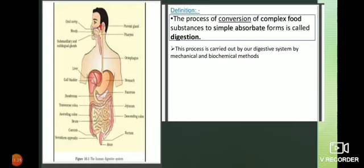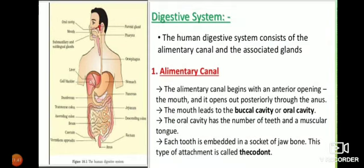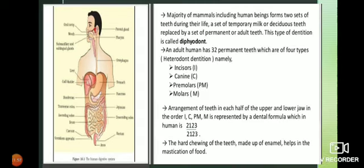Inside the mouth, you will find many teeth and a freely movable tongue. Each tooth is embedded in a socket of the jaw, and such type of attachment is called thecodont. In humans, there are two types of teeth: milky teeth and permanent teeth. This type of dentition is called diphyodont.